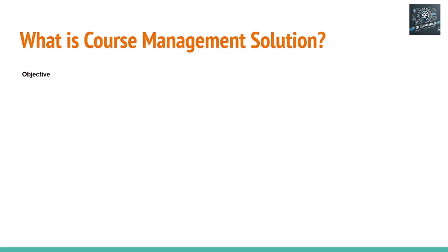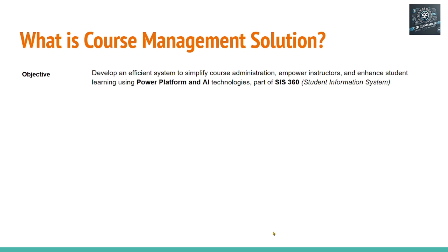What is course management? The objective is to develop a simplified course administration system using Power Platform and AI technology, which is nothing but Microsoft Copilots. This is a part of SIS, which stands for Student Information System 360. That is the project name, and course management is one of the modules. So we are going to first build together the course management solution.